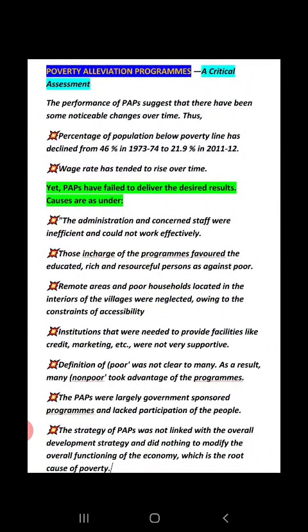Remote areas and poor households in villages are neglected. Institutions providing facilities such as credit and marketing are not very supportive. Many people are unaware of the definition of 'poor,' and in many places non-poor persons take advantages meant for the poor. Since poverty alleviation programs are government-sponsored, not many people are able to participate. Moreover, the strategies of poverty alleviation programs are not linked with overall development strategies, so the root cause of poverty is still not being eliminated. Until attention is paid to these critical issues, poverty alleviation programs alone cannot solve the problem. These programs will be fruitful only when these problems are removed, and then the problem of poverty and unemployment will also be removed. That's all from this chapter — thank you very much.